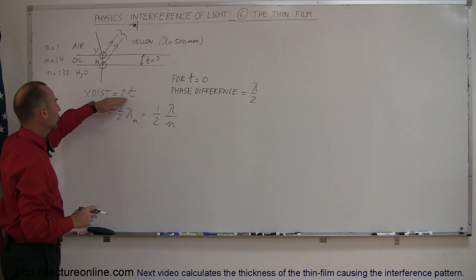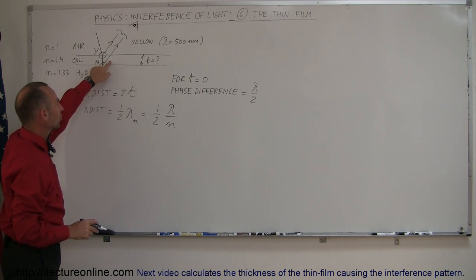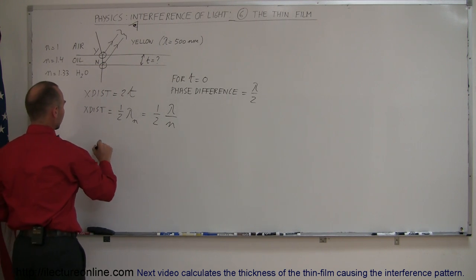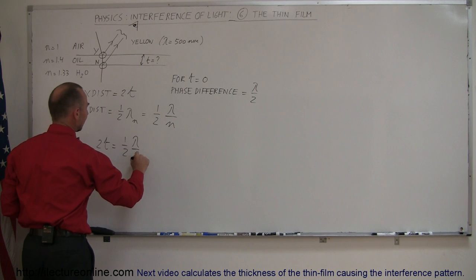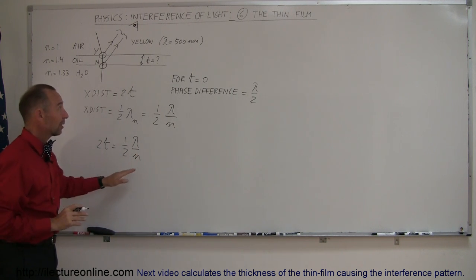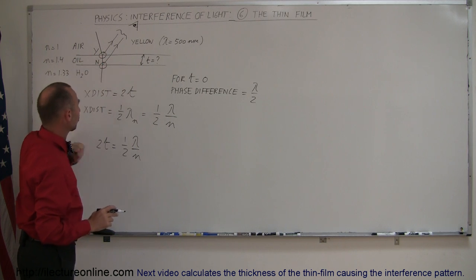So now we determined that the extra distance traveled should only be a half a wavelength, and is the wavelength of the light as it travels through the oil. And then we set those two equal to each other. So 2t is equal to one half lambda over n. And again, the reason why it's one half is because we already had a phase difference caused by the shift here and no shift over there.